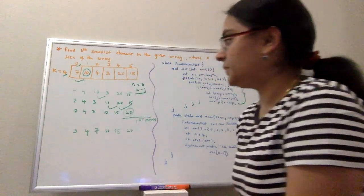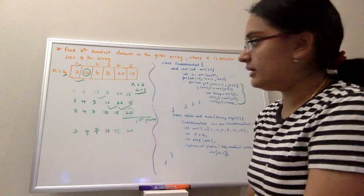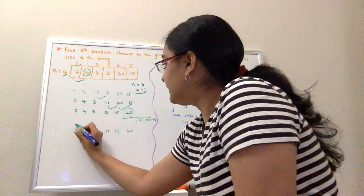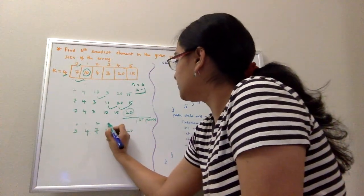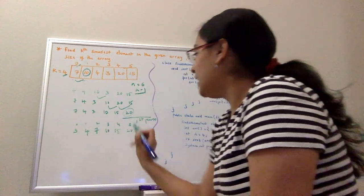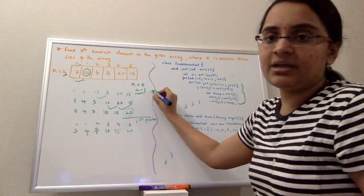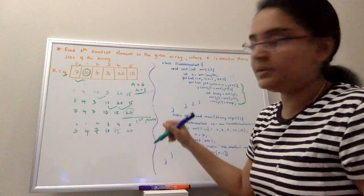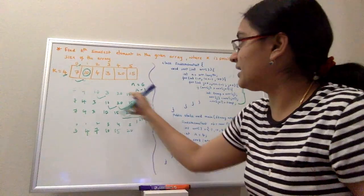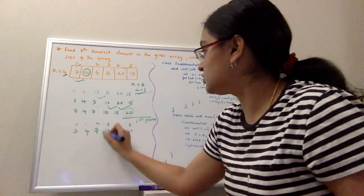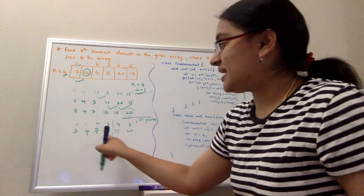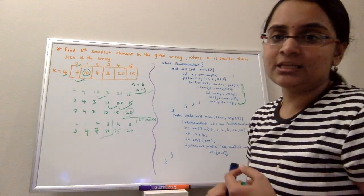So my indices are 0, 1, 2, 3, 4, 5, and by logic we are returning the k minus 1 element. So k is 4, 4 minus 1 is 3, so I'm returning 10. So 10 is my fourth smallest element in the array.